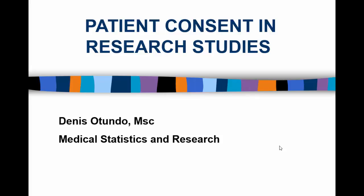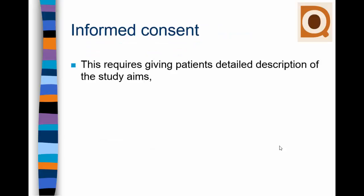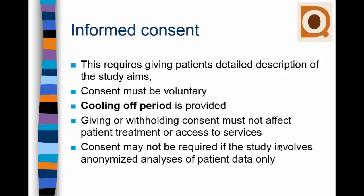Item 24 reads that after ensuring that the potential subject has understood the information, the physician or another appropriately qualified individual must then seek the potential subject's freely given informed consent, most preferably in writing. If consent cannot be expressed in writing, then unwritten consent must be formally documented and witnessed by someone other than the subject and the person taking the consent.